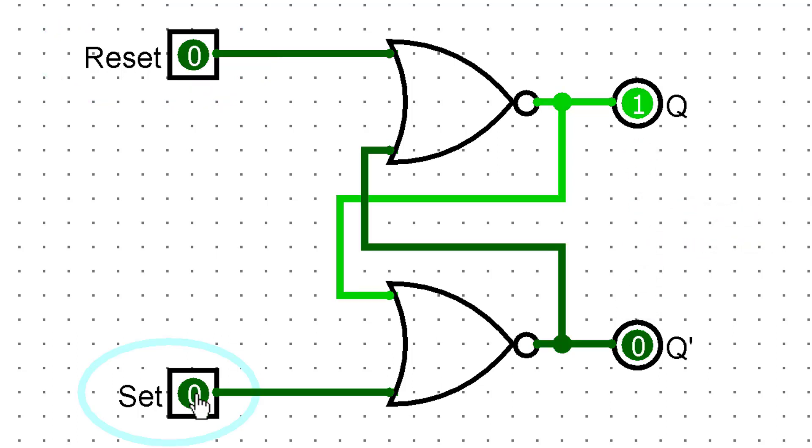By toggling the set and reset signals, we can change the state of the latch. This works because of the way NOR gates work. When either input is high, the output is off.